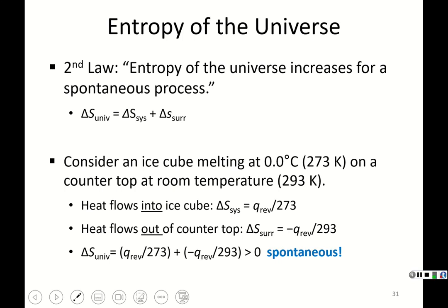Consider an ice cube melting at 0°C on a countertop at room temperature. Heat flows into the ice cube, so delta S_system = Q_reversible / 273. Heat flows out of the countertop (the surroundings), so delta S_surroundings = −Q_reversible / 293. Since we're dividing the positive Q by the smaller number (273) for the system and the negative Q by the larger number (293) for the surroundings, the net delta S_universe is always positive — so this process is always spontaneous.